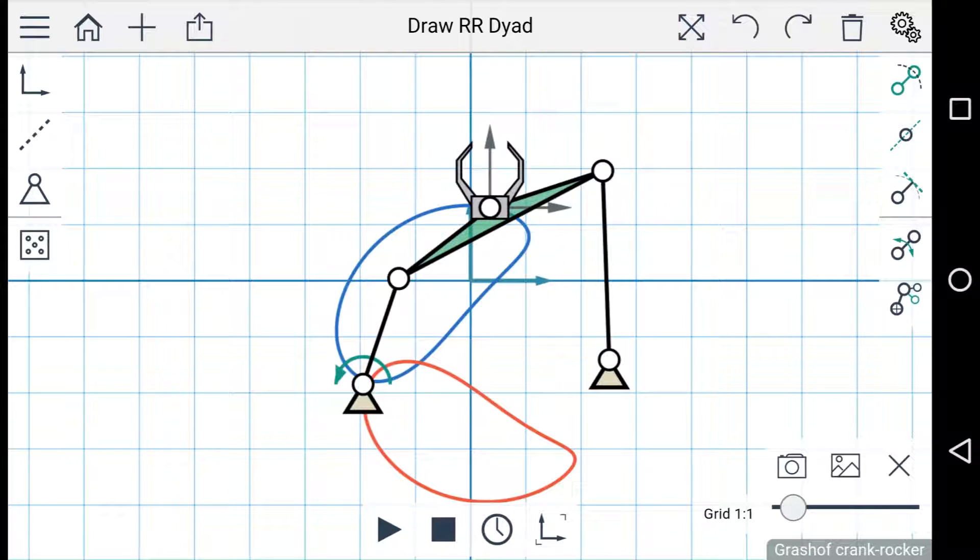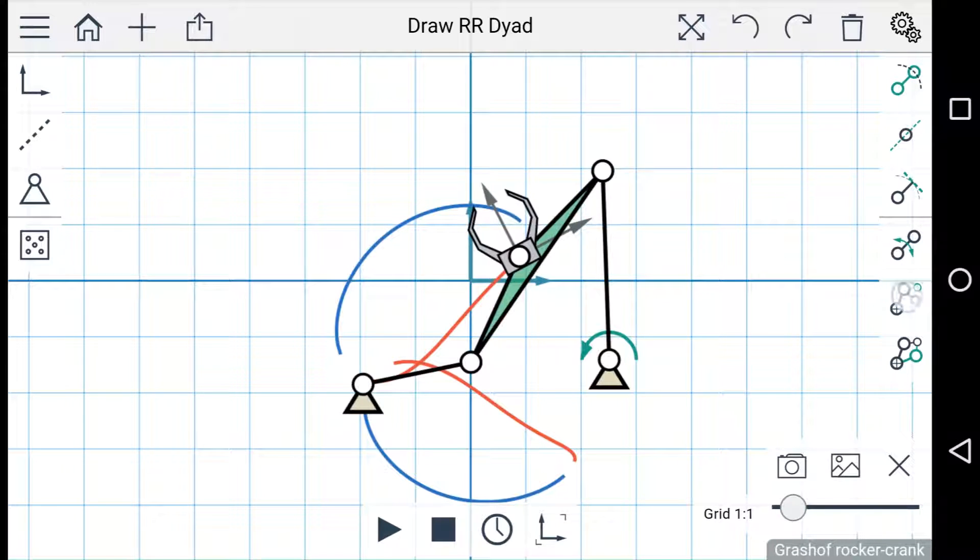You'll notice that when I switch the driving link, a third button appears, and this shows up when there are multiple branches on each circuit. So you can switch between branches and switch between circuits.